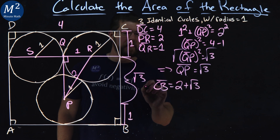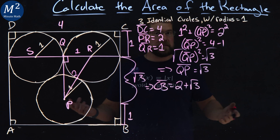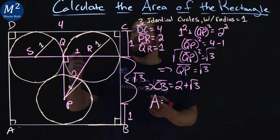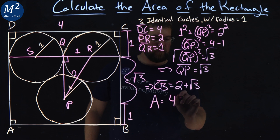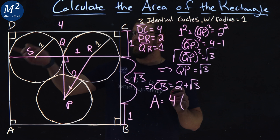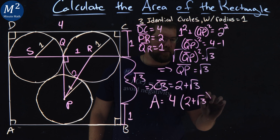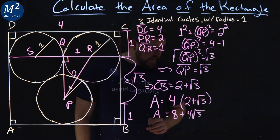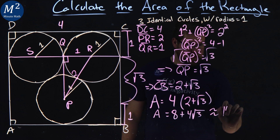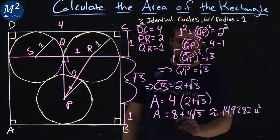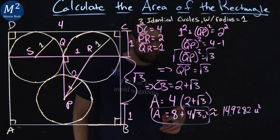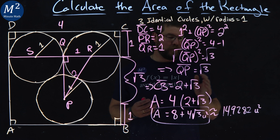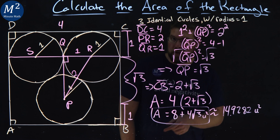Now we have two side lengths of the rectangle to multiply together and get the area. The area equals length times width. DC is 4, and CB is 2 plus square root of 3. So the area equals 4 times (2 plus square root of 3), which equals 8 plus 4 square root of 3. As a decimal, that's approximately 14.9282 units squared. The exact area of this rectangle is 8 plus 4 square root of 3 units squared.